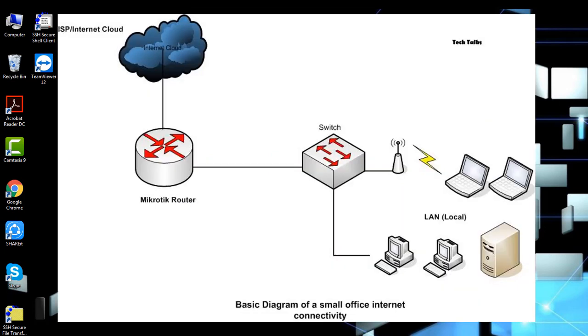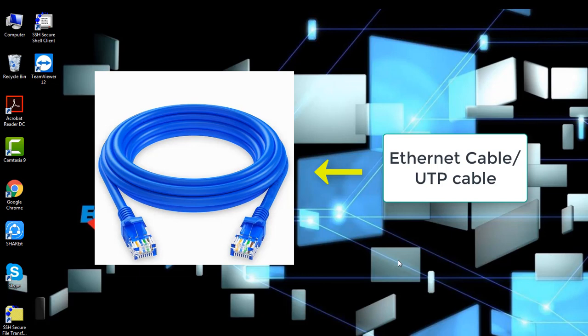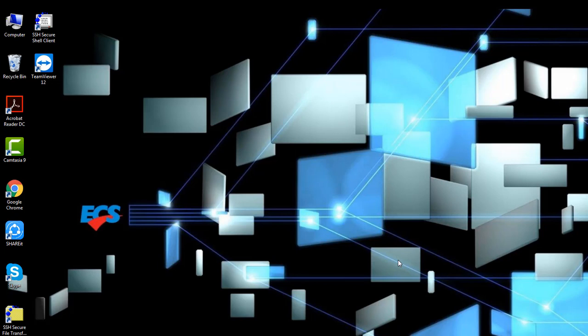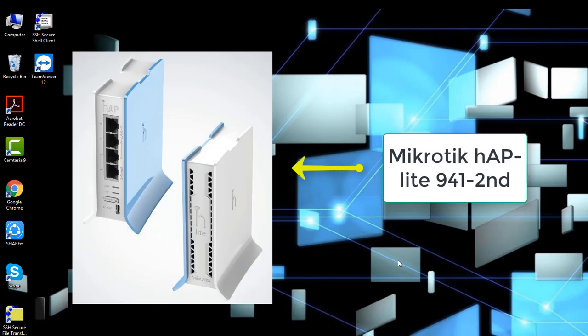Let's start with tutorial number one. In this video I am going to show you the initial configuration of a MikroTik router. But before we configure the router, you need to know how to connect your router with your PC or laptop. You need an Ethernet cable to connect your router to your PC or laptop. And if you don't have a MikroTik router, I recommend you buy a cheaper one like the Hap Lite RB941.